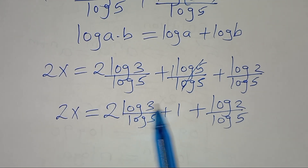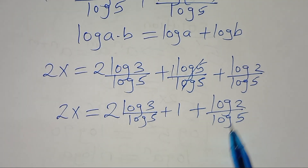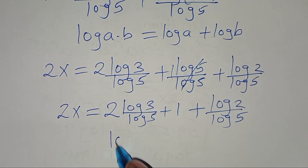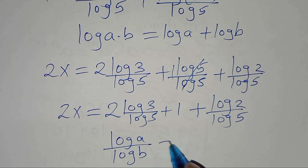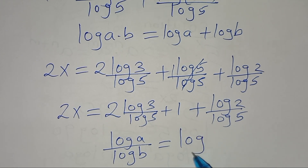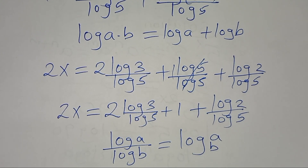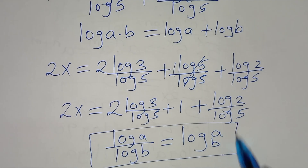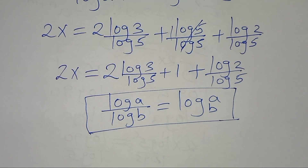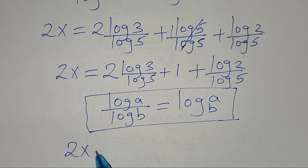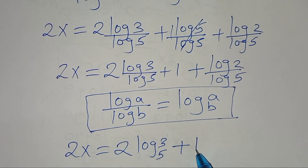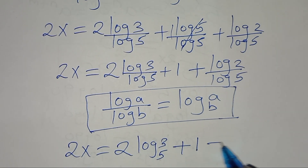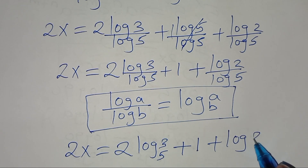Now, log 3 divided by log 5 and log 2 divided by log 5 are each in the form of log a divided by log b, which you can express as log base b of a. Applying this change-of-base property, it follows that 2x is equal to 2 times log base 5 of 3, plus 1, plus log base 5 of 2.